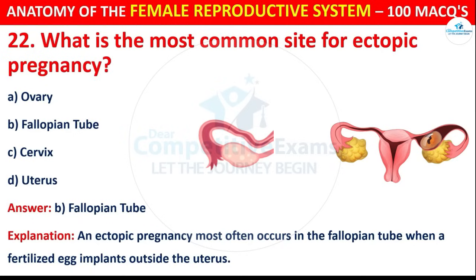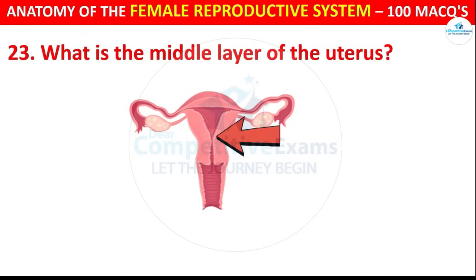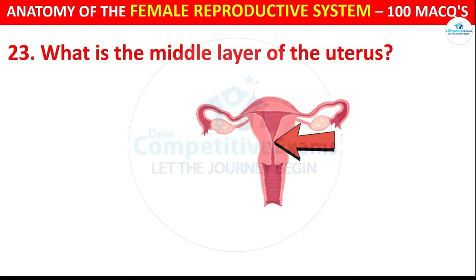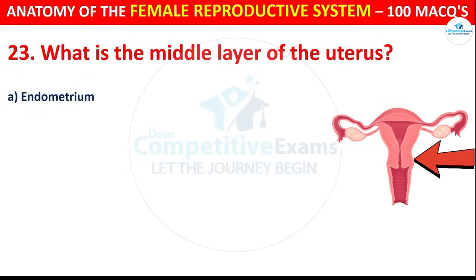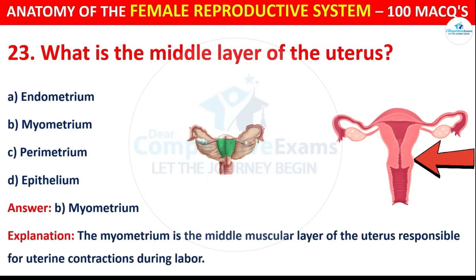Question number 23: What is the middle layer of the uterus? Options are: Endometrium, Myometrium, Perimetrium, or Epithelium. The correct answer is B, i.e. Myometrium. The myometrium is the middle muscular layer of the uterus, responsible for uterine contractions during labor.